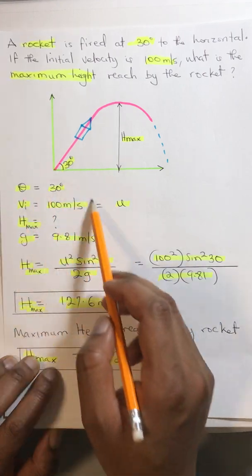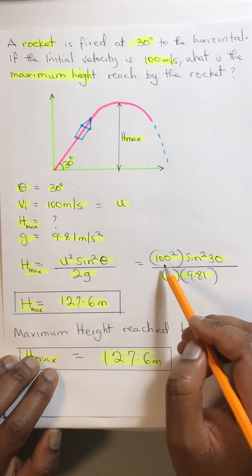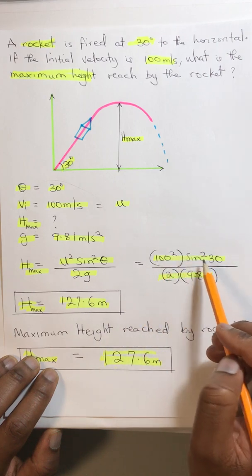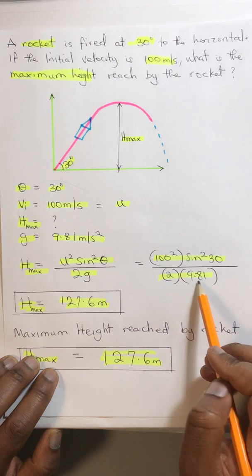By slotting all the parameters in the formula, we have 100 squared sine squared 30 over 2g times 9.81.